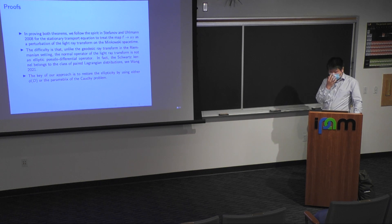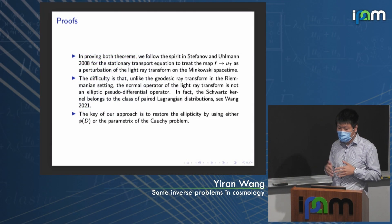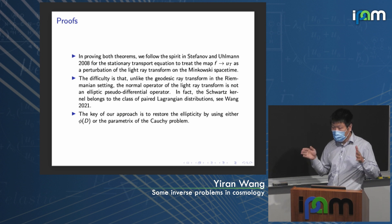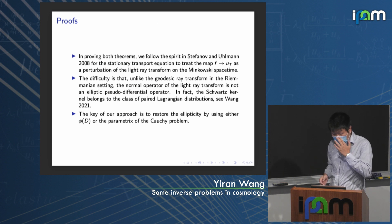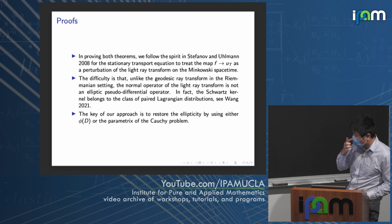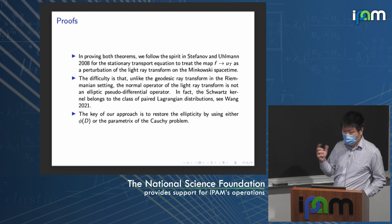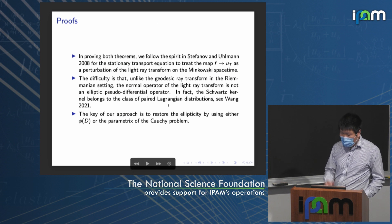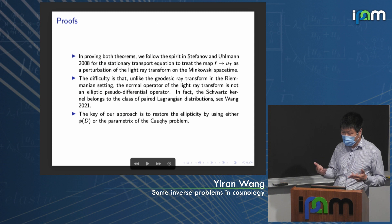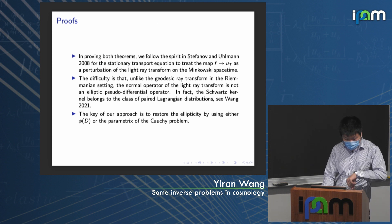In the Riemannian setting studied by Stefanov-Uhlmann, the normal operator of a geodesic ray transform is a pseudo-differential operator. In our Lorentzian setting, the normal operator of the light-ray transform is a paired Lagrangian distribution — it is not elliptic everywhere. The key idea for proving both theorems is to either use the spectral cutoff Φ_D, or use the parametrix of the Cauchy problem to correct the operator to become elliptic. This is why we can obtain these stable determination results.